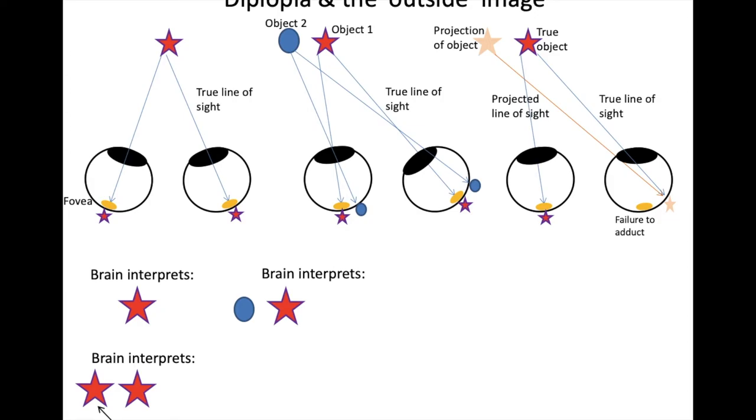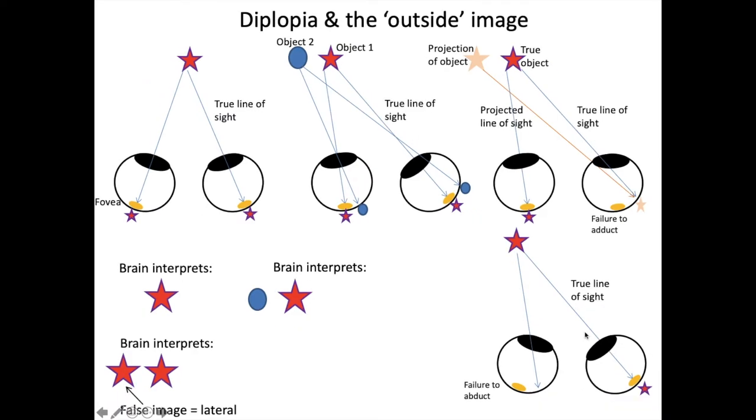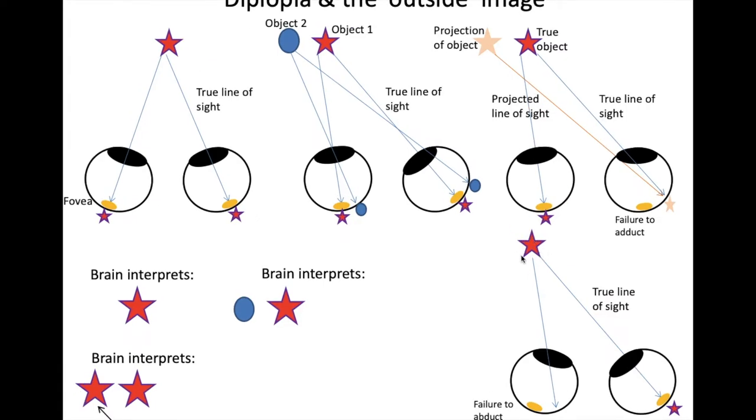Now let's look at the pathological situation, where you have the opposite problem. Failure of abduction in the other eye. The eye is able to adduct correctly. The light from the star is able to hit the fovea. This gives you the true image. Now this eye has failed to abduct. And you can see that again, what happens is that the light from the image, from the object, is now hitting the side of the retina to the side of the fovea.